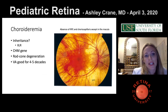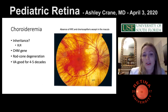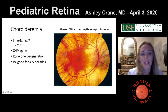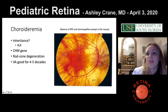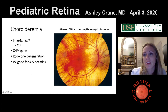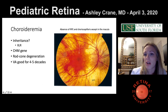Choroideremia is X-linked recessive, in the CHM gene — a rod-cone degeneration. Vision is good for four to five decades, so it's not really a pediatric disease, but it is an inherited disorder. You can see absence of RPE and choriocapillaris except in the macula on fundus photos.